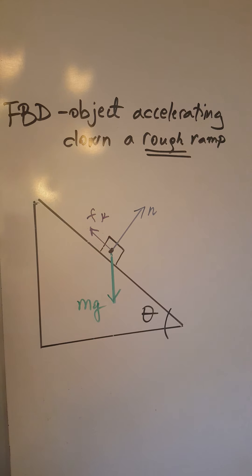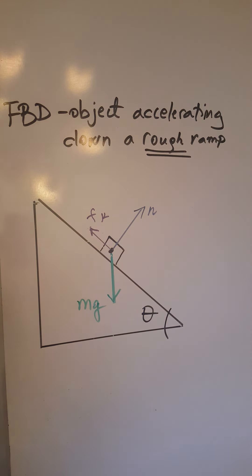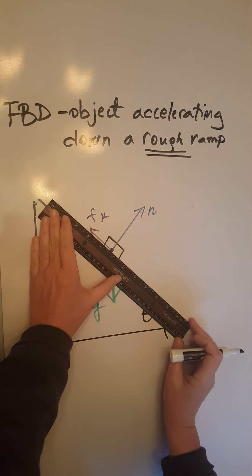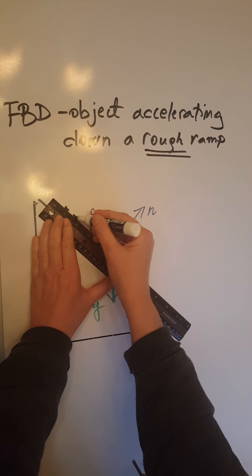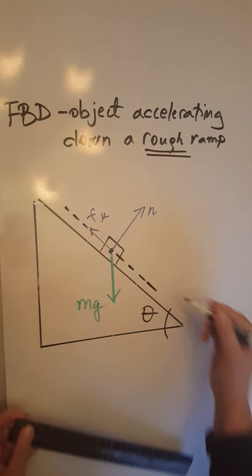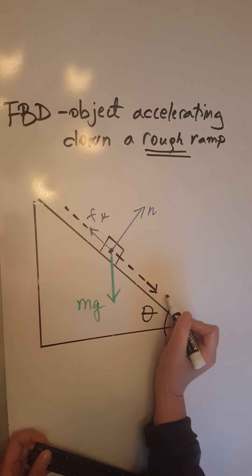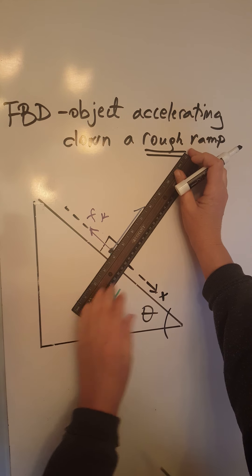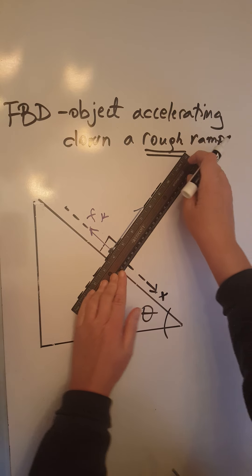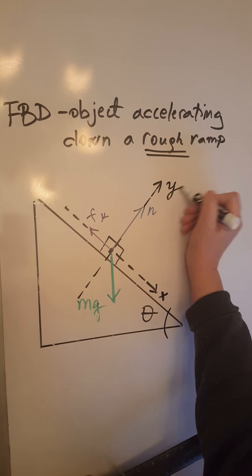Now we need to look at all these forces and consider a magnitude check. To do that, we need our helping x and y-axes. The x-axis will be parallel to the motion — draw it through the center of the object parallel to the surface. The y-axis will be perpendicular to the surface; draw it through the center of the object as a dotted line and label it y.